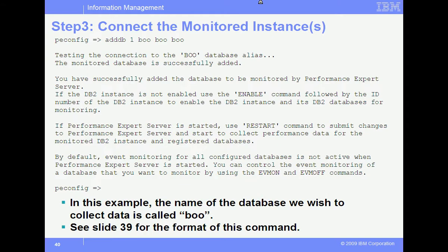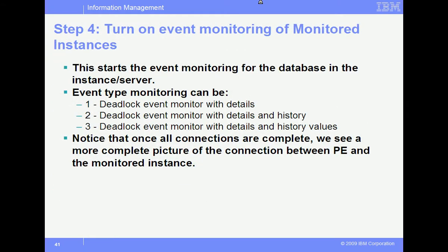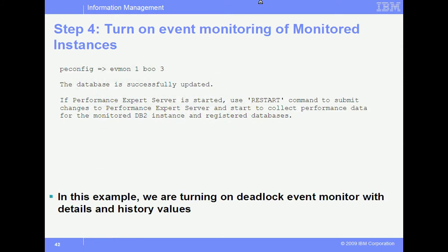We move to step 4, which is where we turn on event monitoring. This is a very simple step, but it can have very devastating results in the amount of data collected in the event monitor file system. So, unless you have a lot of space, only use event type 1, which is deadlock event monitor with details. The evmon command is used to turn on these events. The format is evmon, instance ID number, database alias, event type. The instance ID number set up in this example was 1, and in this case we are turning on everything, so we are going to be using event type 3.